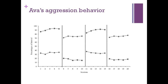For Ava, during baseline, aggressive behaviors were stable and occurred an average of 91% of intervals over five sessions, and on-task behavior occurred an average of 33.4% during the first baseline. When treatment was first implemented, aggressive behaviors decreased to an average of 17%, and on-task behaviors increased to an average of 73.8% of intervals over five sessions.